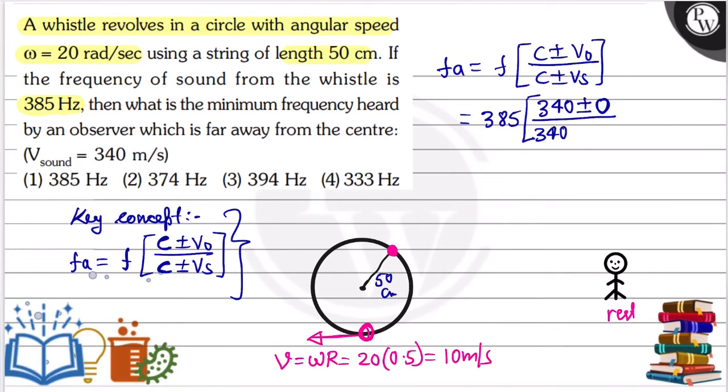Since the frequency is decreasing, we put a larger value in the denominator. So this becomes plus 10. It's 340 plus 10, because the whistle's velocity moving away is 10.